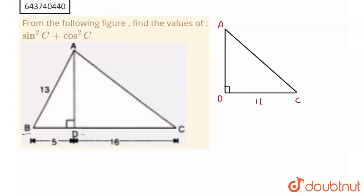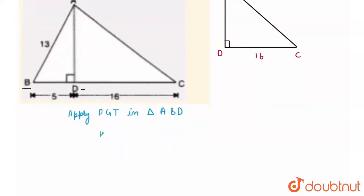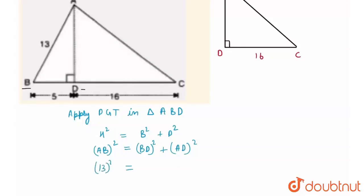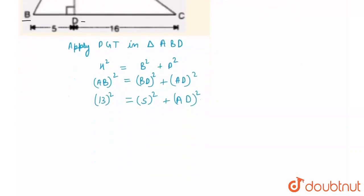The length of side DC is equal to 16, and I need to find the length of AD. To find AD, I'll apply Pythagoras theorem in triangle ABD. Pythagoras theorem states: hypotenuse² = base² + perpendicular². For triangle ABD, hypotenuse = AB = 13, base = BD = 5, and perpendicular = AD. So AD² = 169 − 25 = 144, therefore AD = 12.